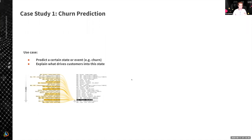If we have some sequence of events — for example, web clicks, calls to customer support, or interactions with a mobile application — we are generally interested in understanding, for some event of interest like product return or account cancellation, how it relates to all other events in the sequence, what caused this event, and predicting this event for customers who are not in this state yet but approaching it, to take some mitigating action.